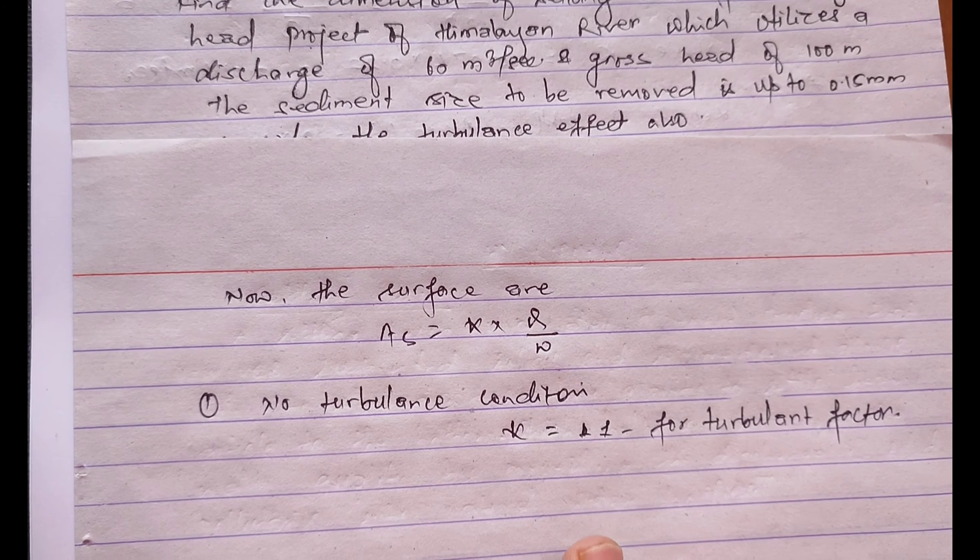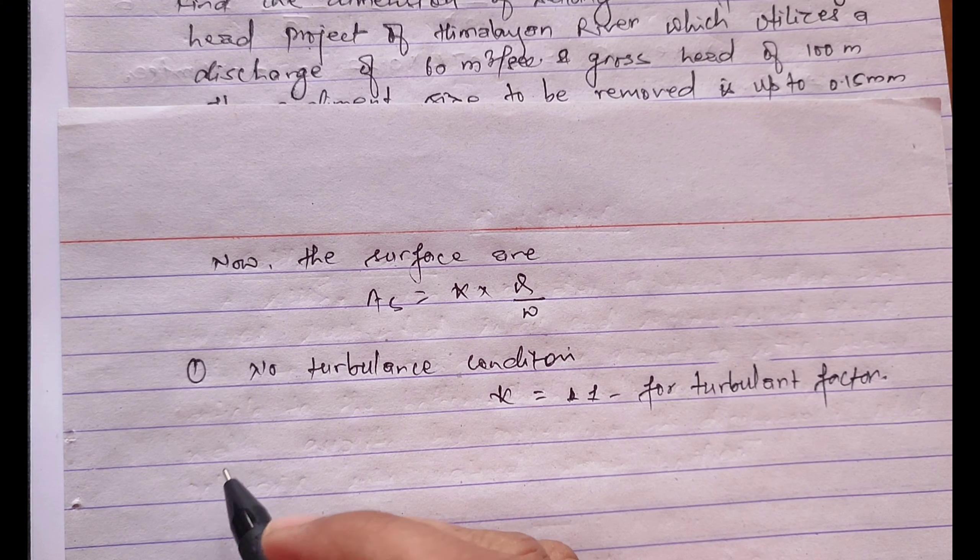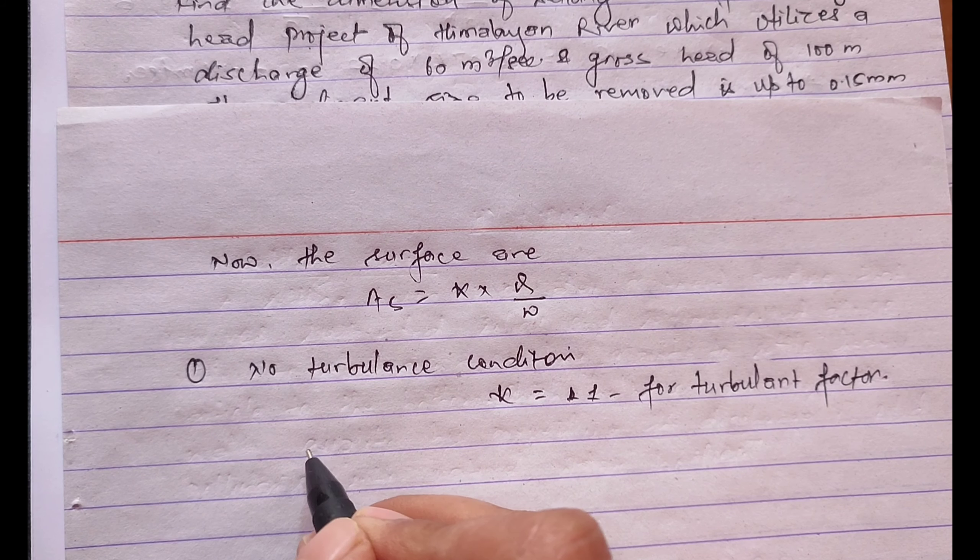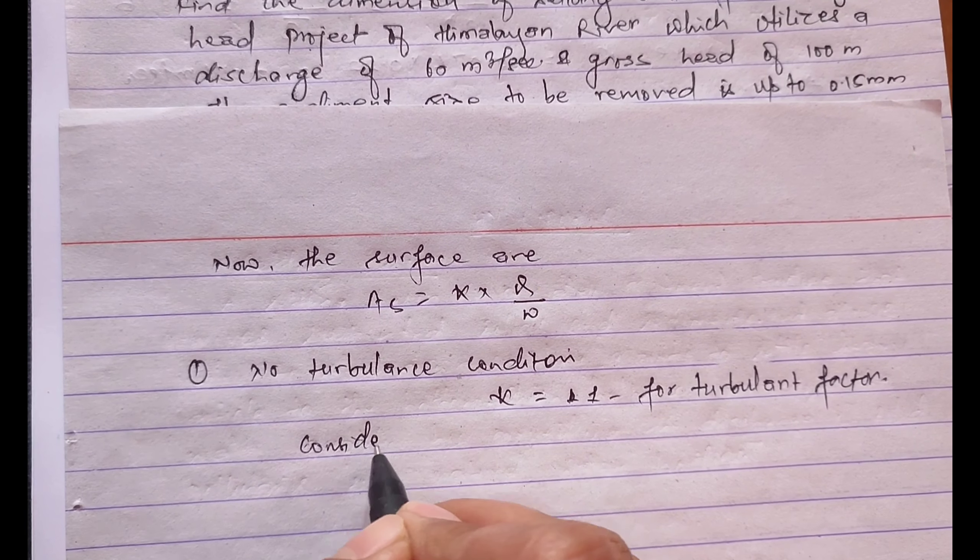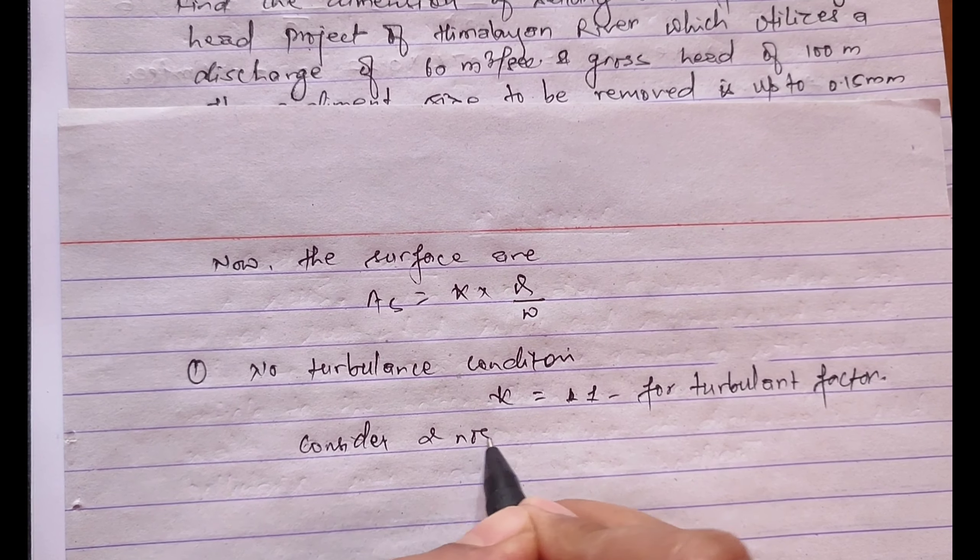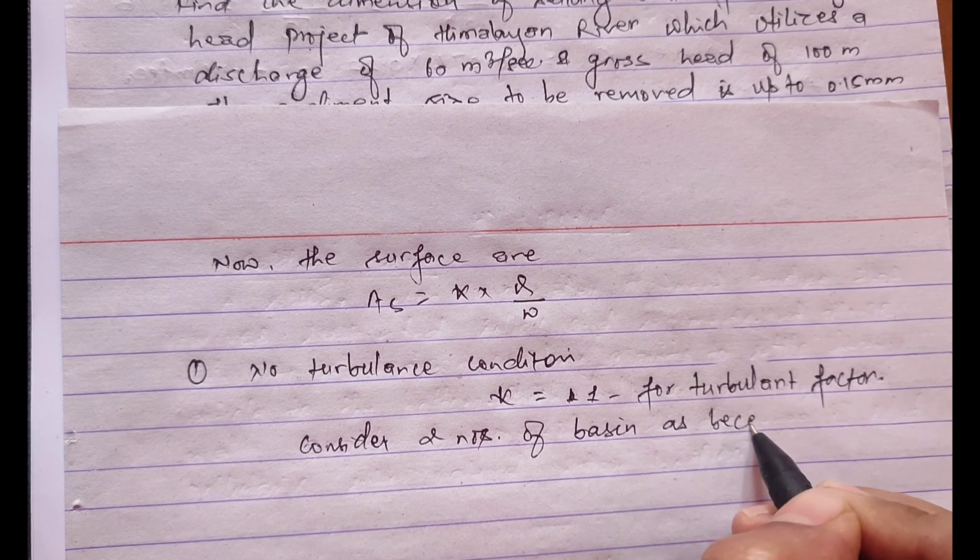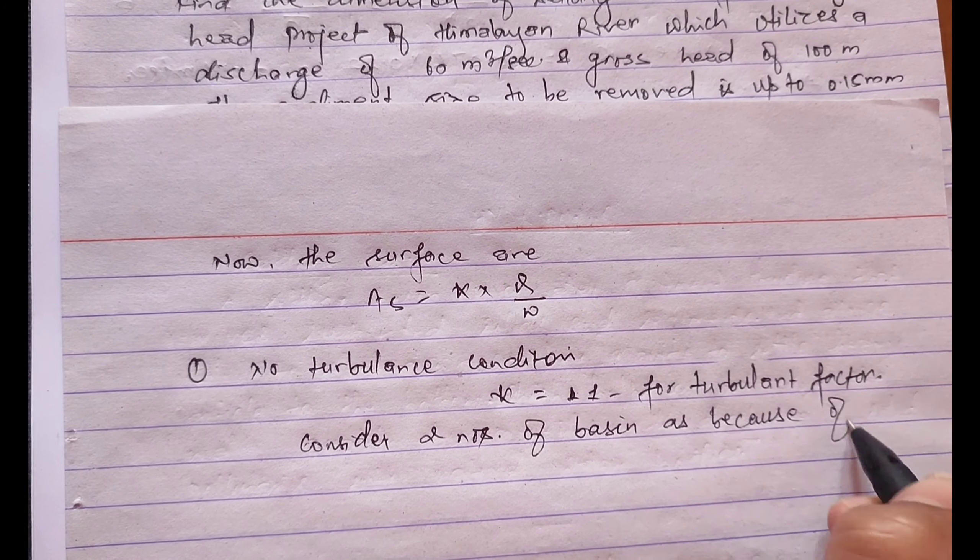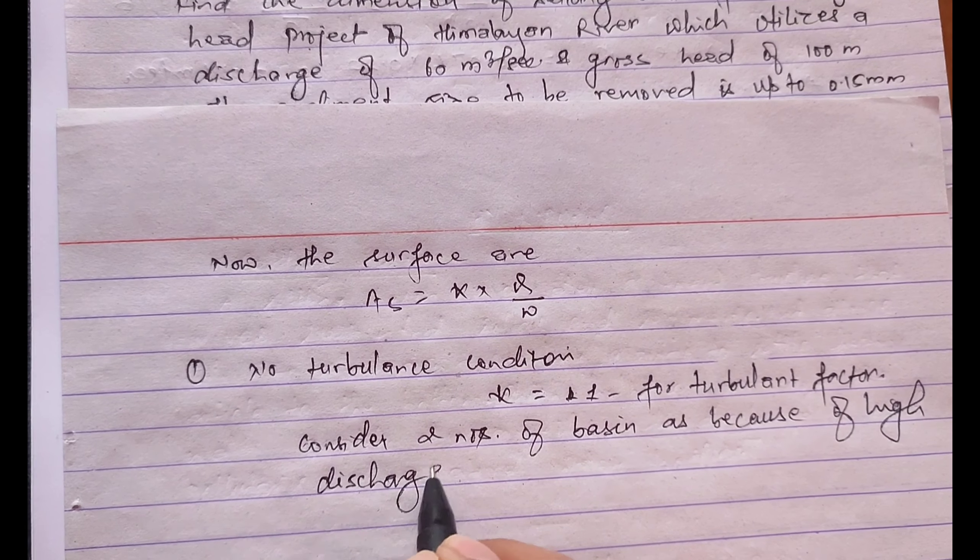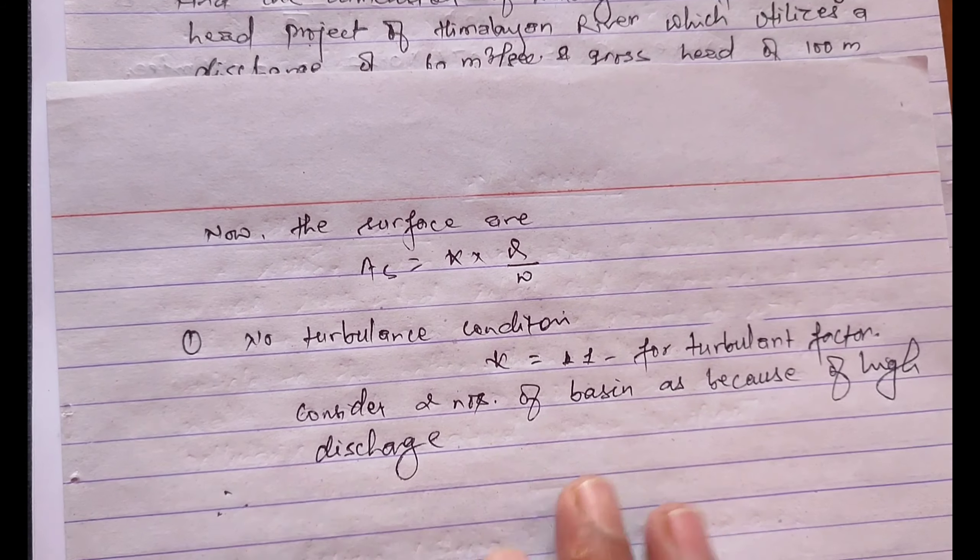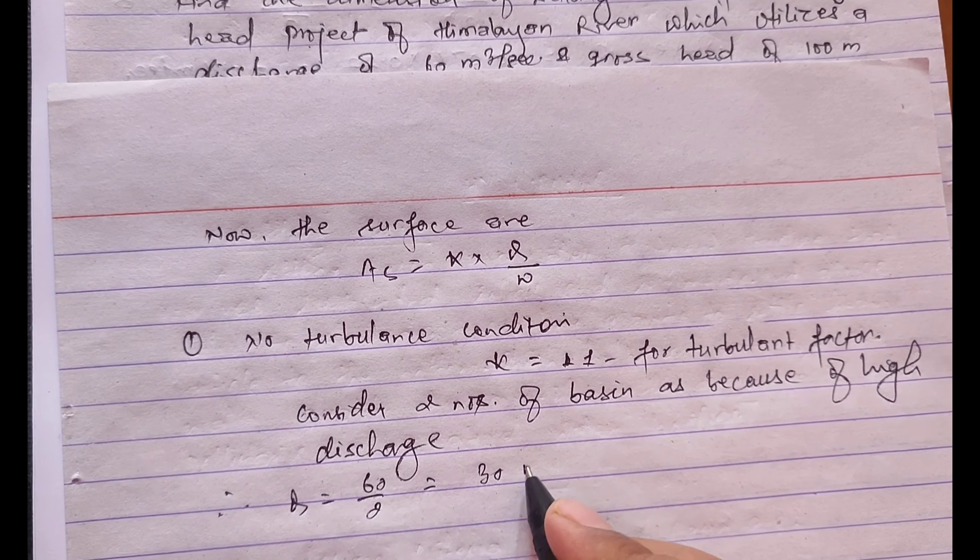As we have the discharge is 60 meter cube per second which is very high, so we'll consider two numbers of settling basin because of high discharge. Therefore the Q for a single basin equals 60 divided by 2 equals 30 meter cube per second.